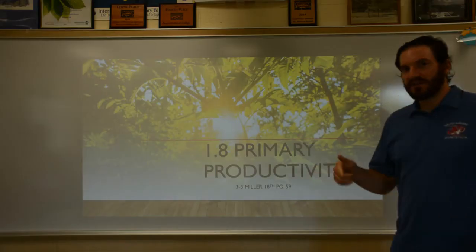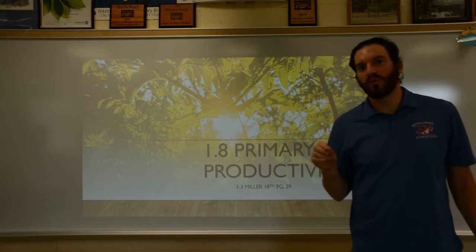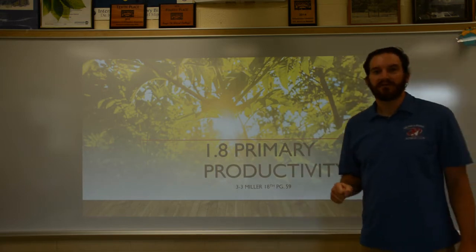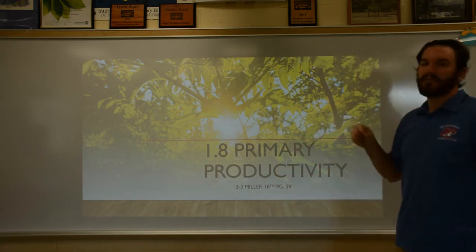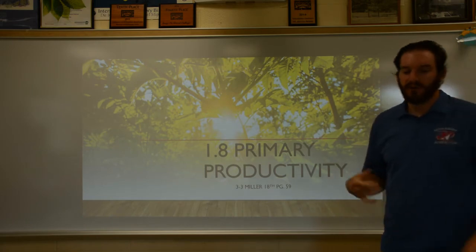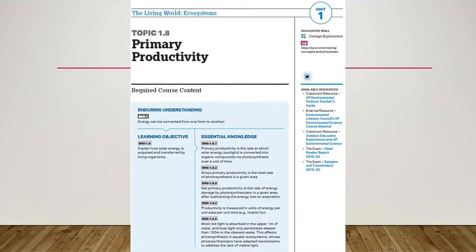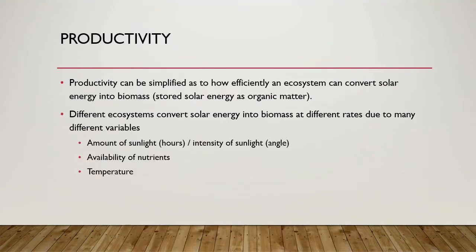Hey everyone, today we're talking about section 1.8 of the AP Environmental Science curriculum, which is primary productivity. The big picture standard associated with primary productivity is: how is solar energy acquired and transferred by living things? We're talking about how do we take solar energy and start off all ecosystems by converting it to biomass.